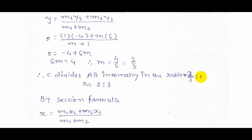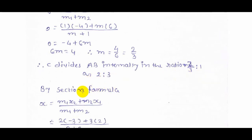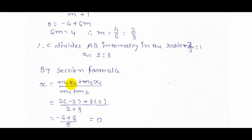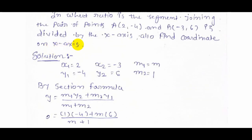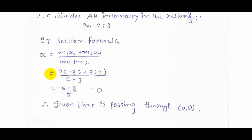By section formula, now we find the coordinate of x-axis. The formula is x = (m1*x2 + m2*x1) / (m1 + m2). Now put the values of m1, x2, and m2, x1.